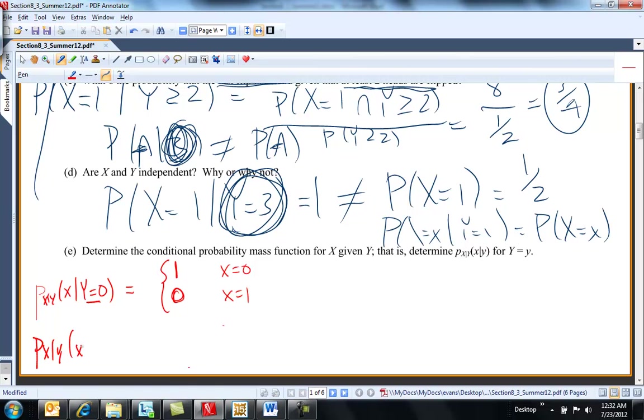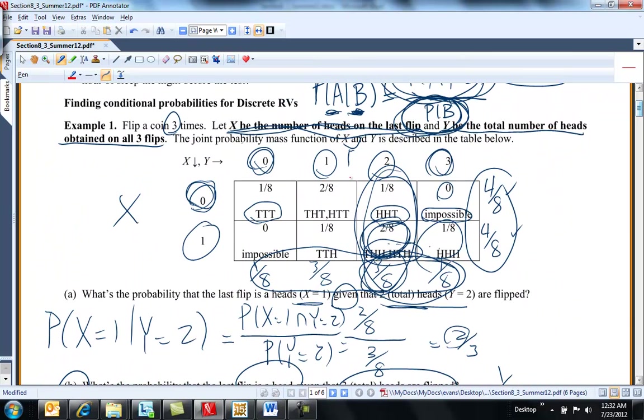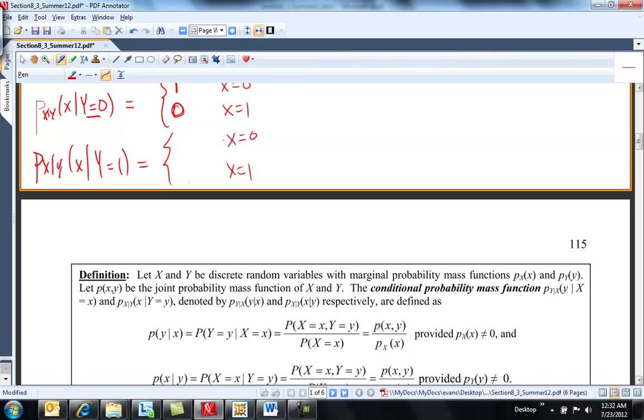Then I can define P of X given Y is equal to 1. Same way, X can either take on the value 0 or it can take on the value 1. If we go back up to our chart, given Y is equal to 1, so I'm sitting right here, that's a 3/8 total probability. So it's either 2/3 that X takes on the value 1 or 0. So it's 2/3 and 1/3.